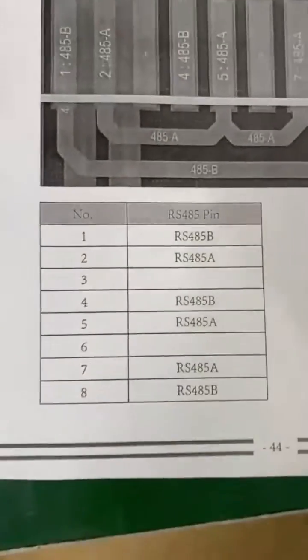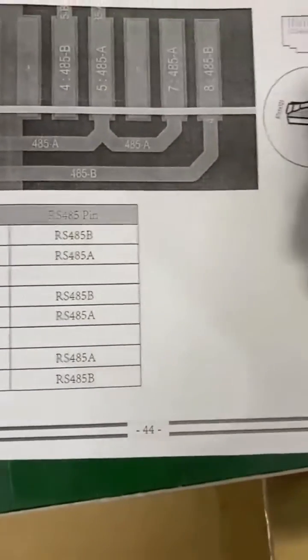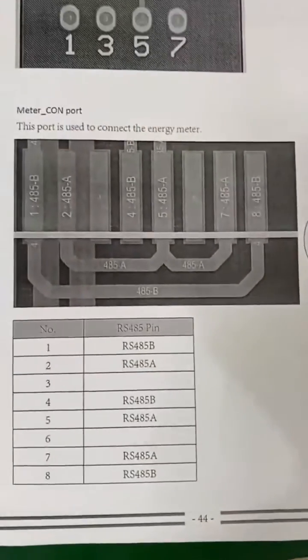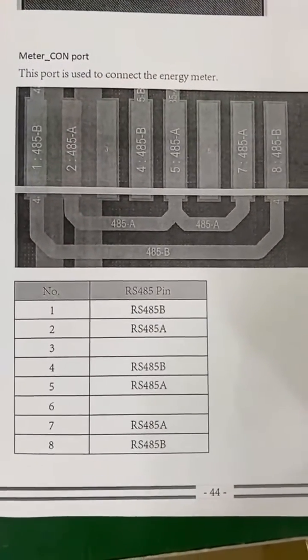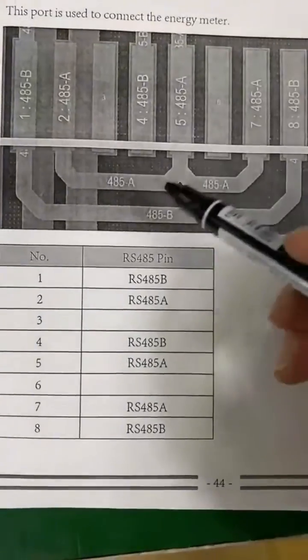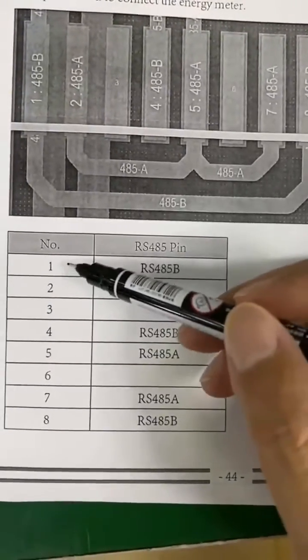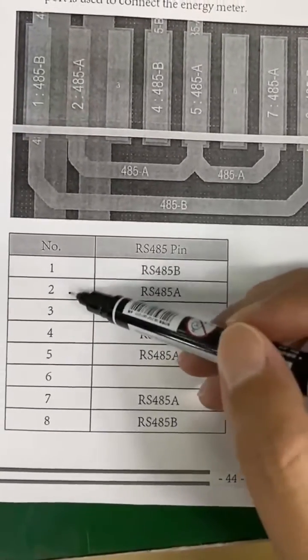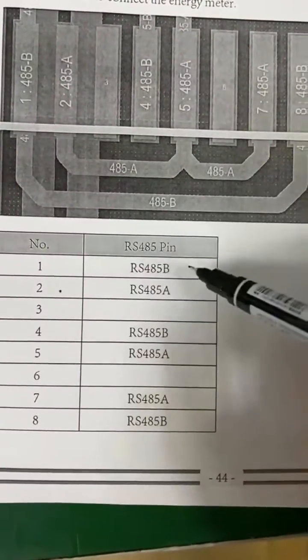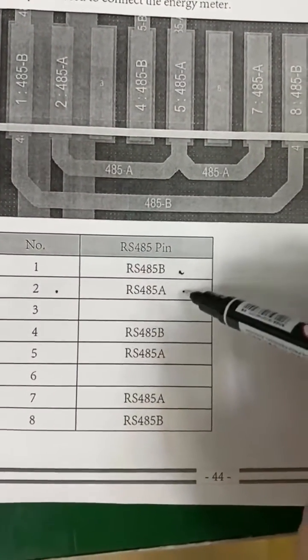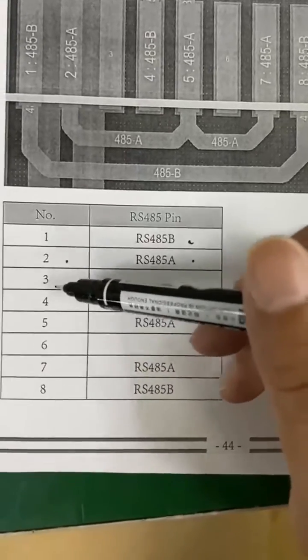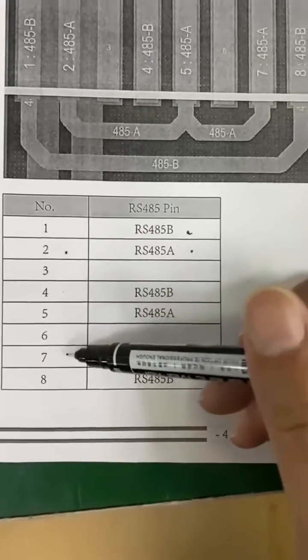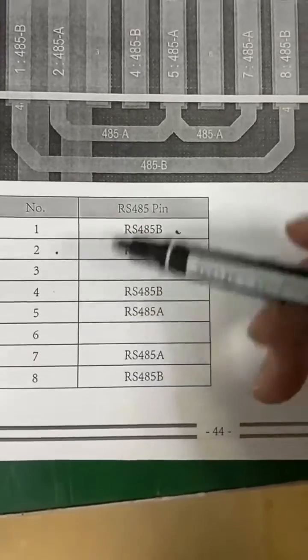This is the pin definition for the meter port of the hybrid inverter. Terminal 1 and terminal 2 are B and A respectively. You can also use pin 4 and pin 5, or pin 7 and pin 8.